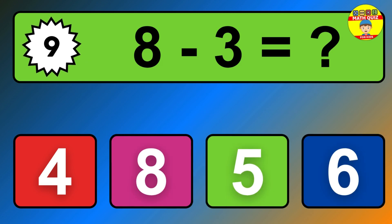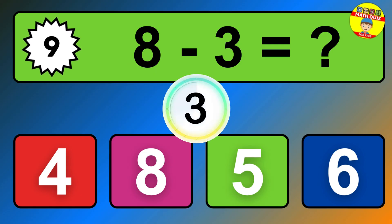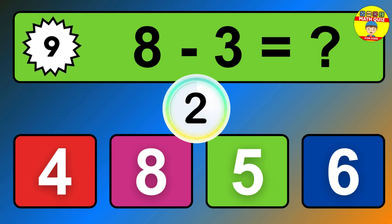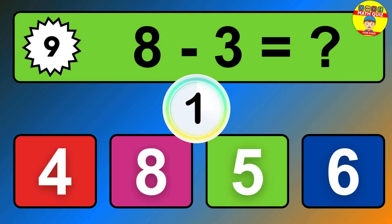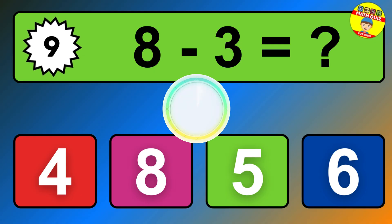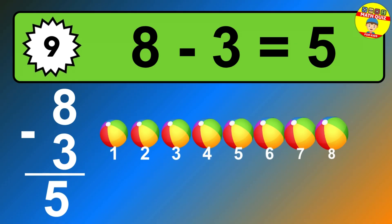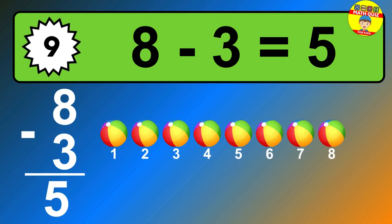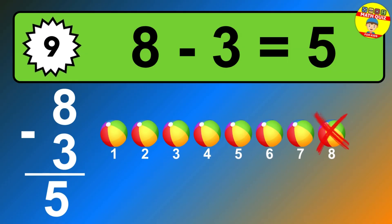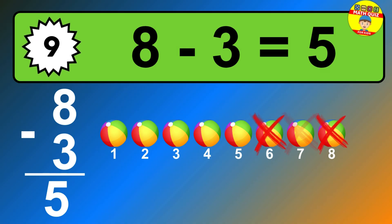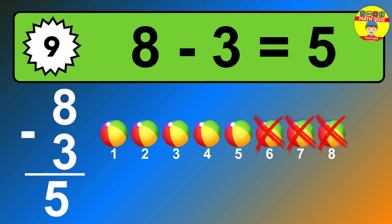Question 9. 8 minus 3 equals what? So the answer is 8 minus 3 is 5. Let's count it. 1, 2, 3, 4, 5.